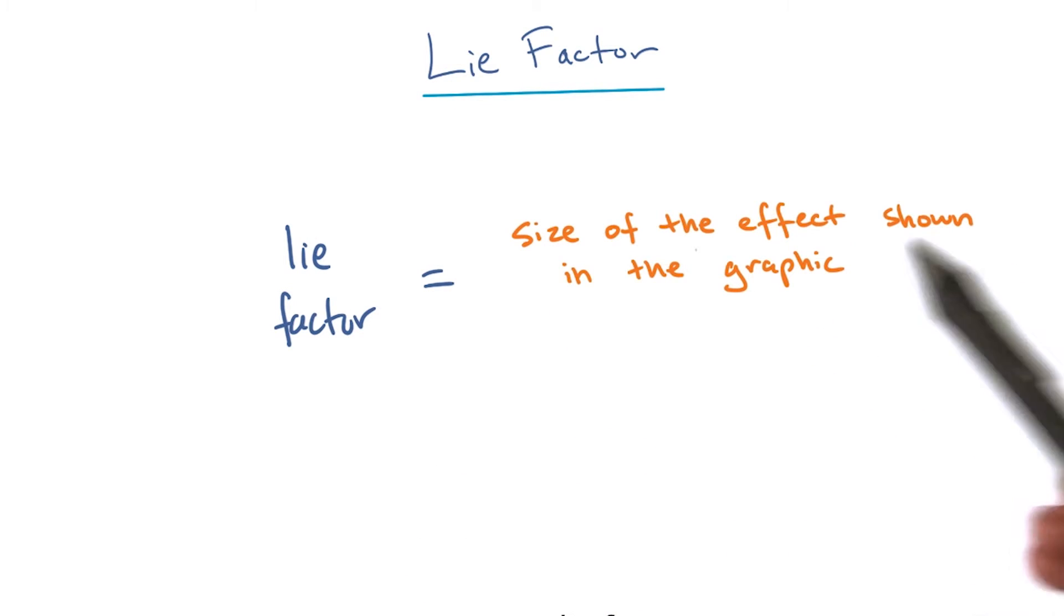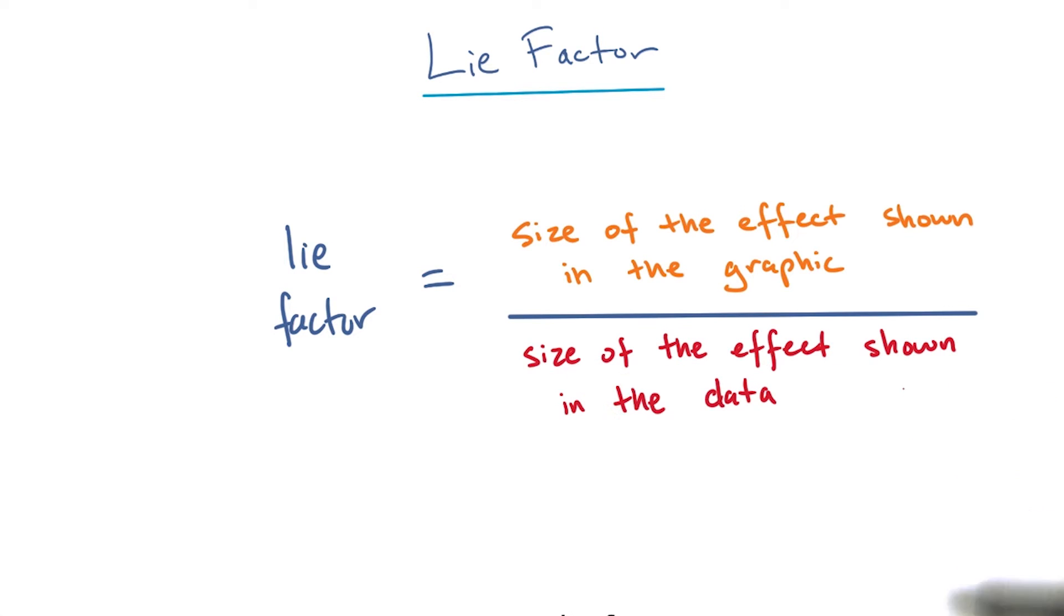You compute the lie factor by dividing the size of the effect shown in the graphic by the size of the effect shown in the data.